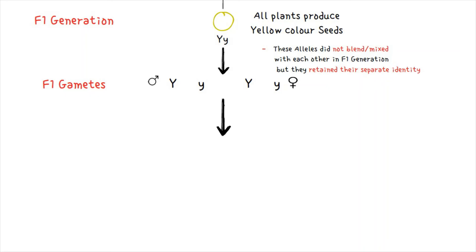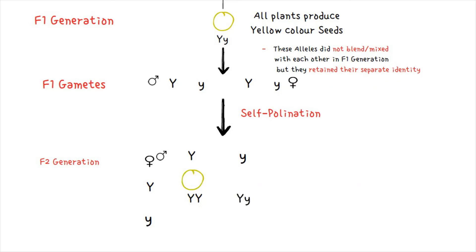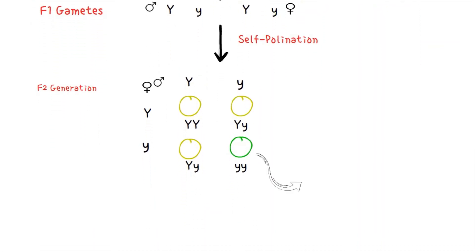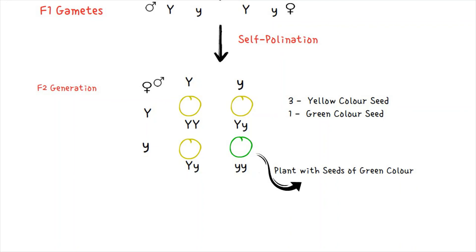When we self-pollinate the F1 plants, they give rise to the F2 generation. The male and female gametes unite in various combinations: some produce plants with yellow seeds, some again produce plants with yellow seeds, and some produce plants with green seeds. So in the F2 generation, we have some plants with green color seeds, proving that the pair of alleles did not blend in the F1 generation but retained their separate identity.